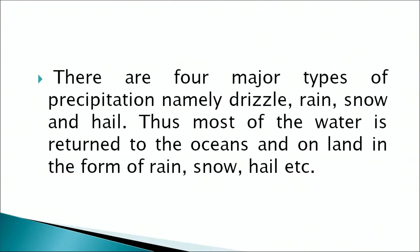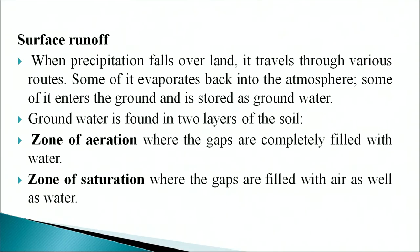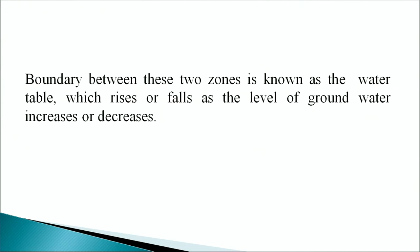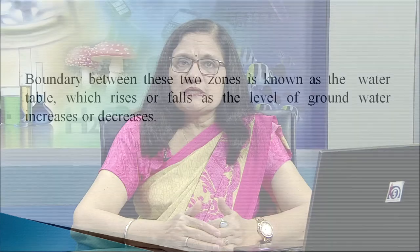There are four major types of precipitation: drizzle, rain, snow, and hail. Thus most of the water is returned to the ocean and land in the form of rain, snow, hail, etc. When precipitation falls over land, it travels through various routes: some evaporates back into the atmosphere, and some enters the ground and is stored as ground water. Ground water is found in two layers of the soil — the zone of aeration, where gaps are completely filled with water, and the zone of saturation, where gaps are filled with air as well as water. The boundary between these two zones is known as the water table, which rises or falls as the level of ground water increases or decreases.